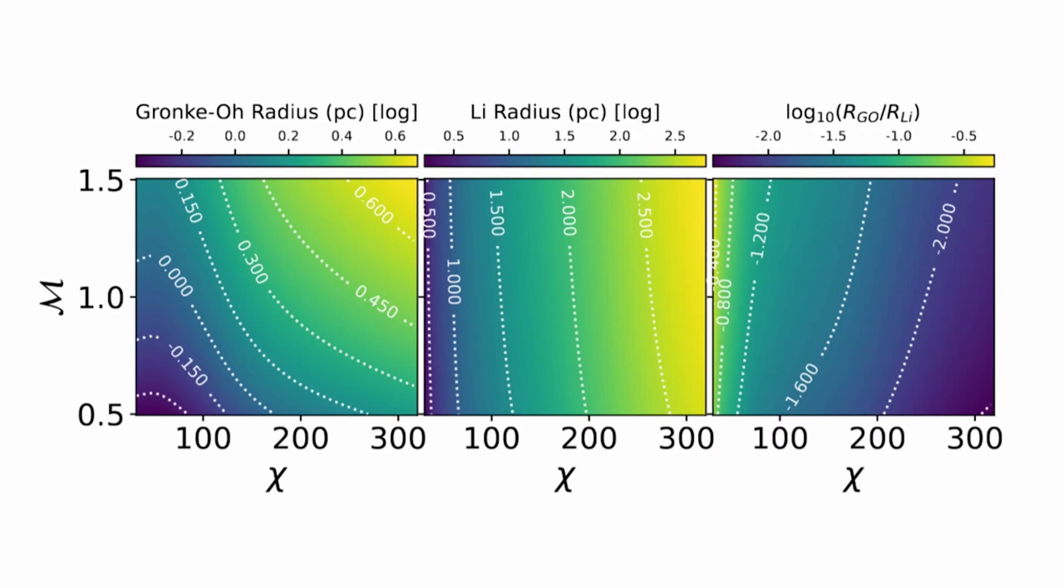Here in this plot, one can see that the cloud size threshold quoted by Gronke Oh is lower by at least an order of magnitude. Here χ is the density contrast between the cloud and the background in the initial setup, while script M is the Mach number of the background wind. These are two important dimensionless parameters of the cloud crushing problem.